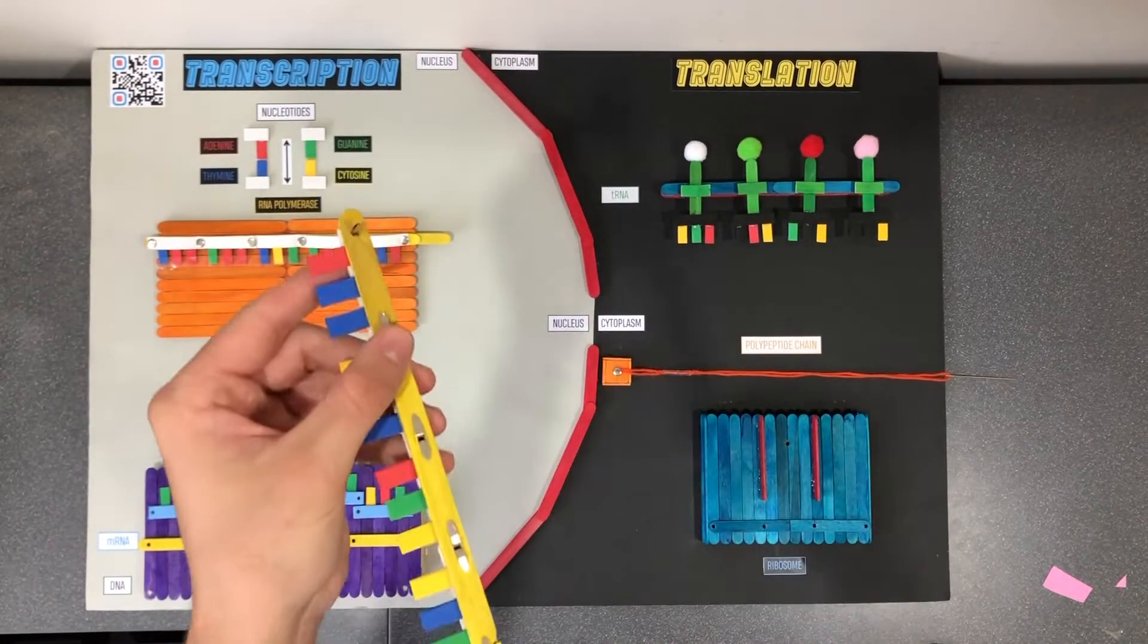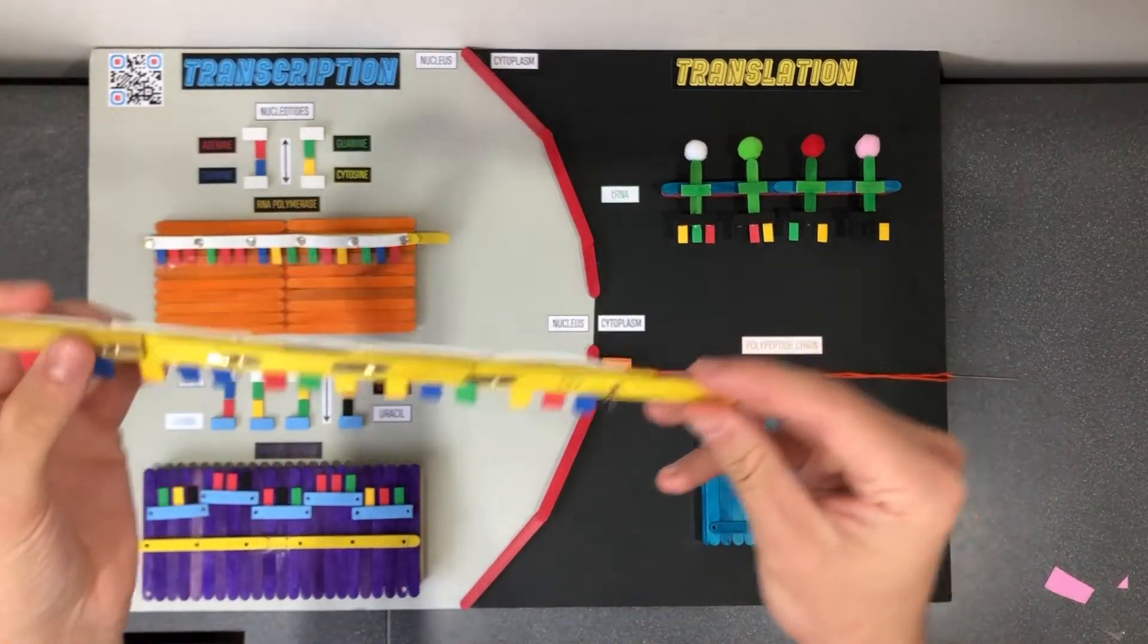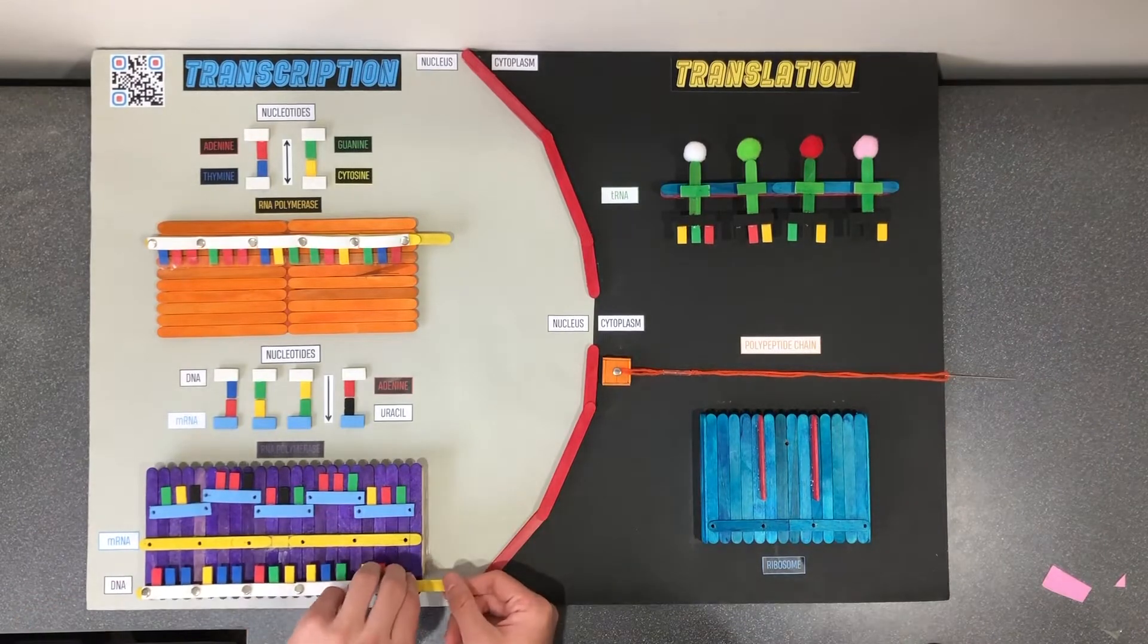The tape holding the bases together, indicative of the hydrogen bonds, will be cut down the middle by the blade protruding from the enzyme.